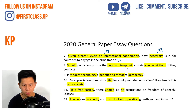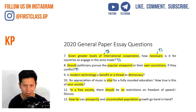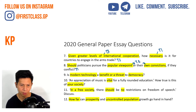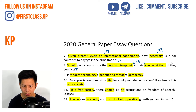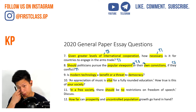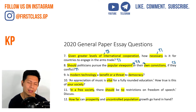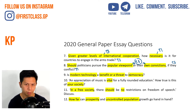'Should politicians pursue the popular viewpoint or their own convictions?' The 'should' is tier 1 — you discuss problems and benefits, is it good or bad? But there's also a comparative element: you're comparing popular viewpoint versus personal conviction. And 'if they conflict' introduces a conditional element. Between a conditional and a comparison, the comparison tends to be harder to address, so we want to emphasize more on the comparison here.